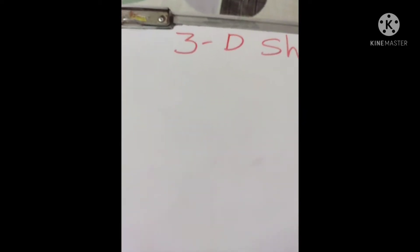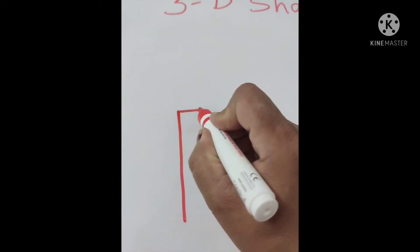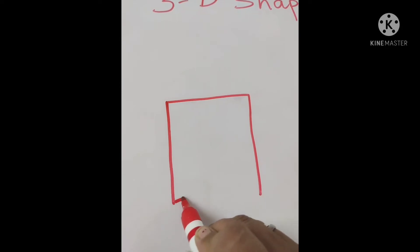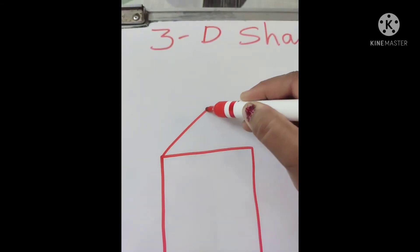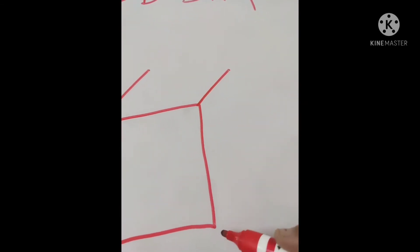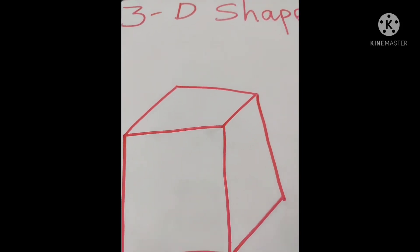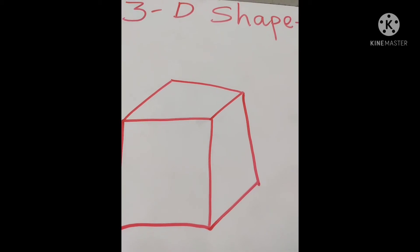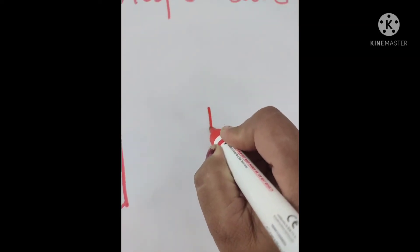Now I will show you how we are going to draw a cube. You can draw a cube in two ways. First way: draw a normal square box, then draw dimensional lines like this, and then join the lines like this. In this way you can draw a cube.